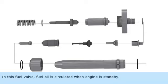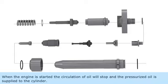In this fuel valve, fuel oil is circulated when the engine is on standby. When the engine is started, the circulation of oil will stop and the pressurized oil is supplied to the cylinder.